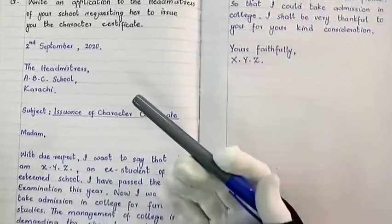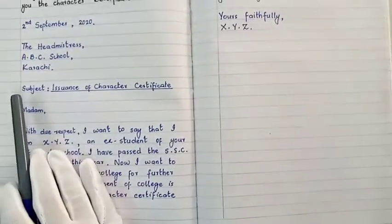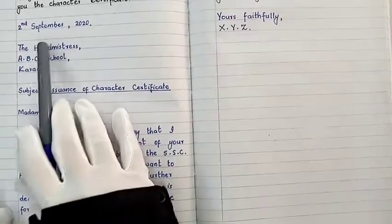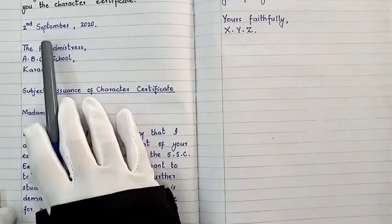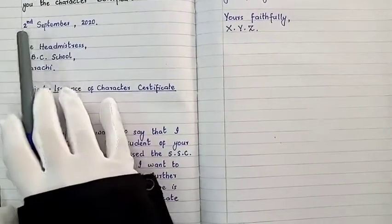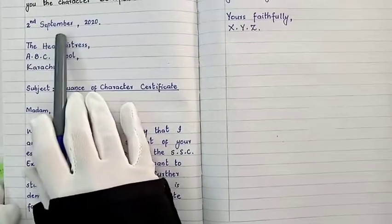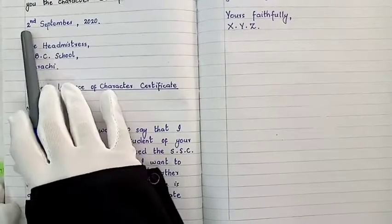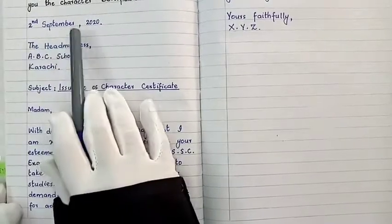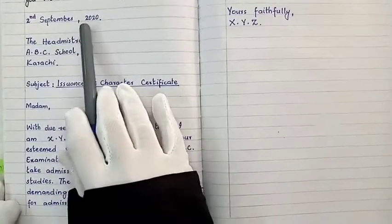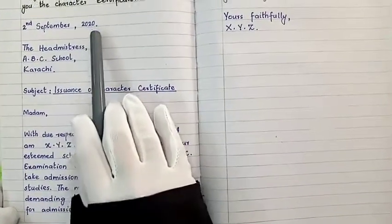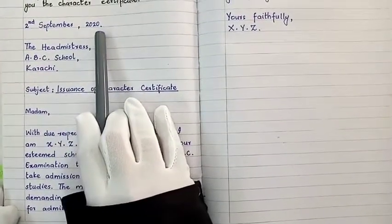After writing the question, you will know the pattern of the application. We will work in left alignment. First of all, we will write the date. Write down the date: 2nd September, 2020, full stop.